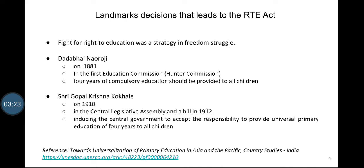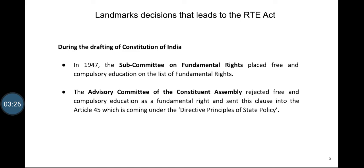But the tricky part in this history is that even though we made consistent demand for free and compulsory education during the freedom struggle, at the time of drafting the Constitution there was no unanimous view that education should be a fundamental right. There were several subcommittees in the Constituent Assembly for drafting the constitution. In 1947, the Subcommittee on Fundamental Rights placed free and compulsory education on the list of fundamental rights. But unfortunately, the advisory committee of the Constituent Assembly rejected this demand and sent this clause to the list of Directive Principles of State Policy.